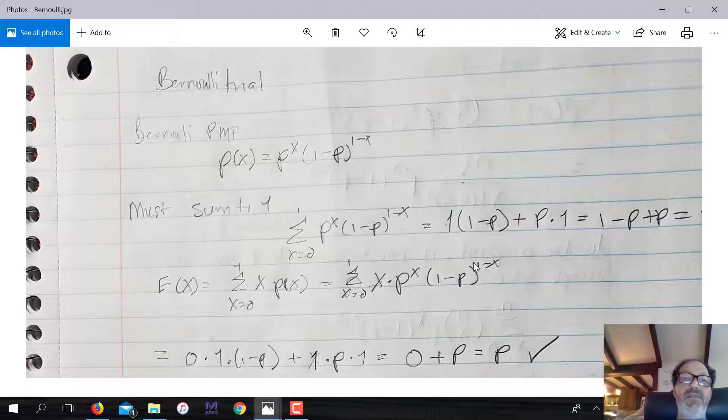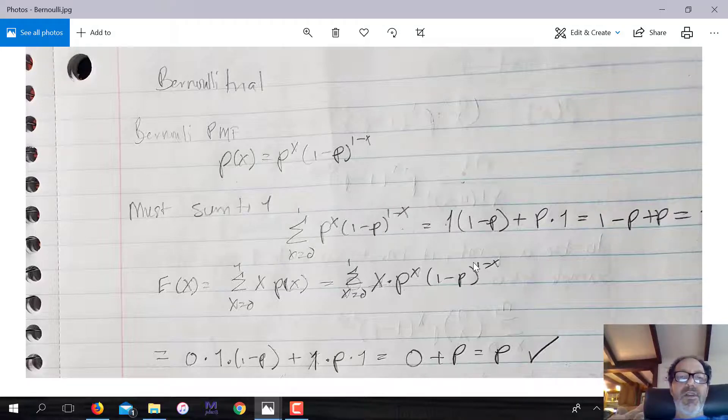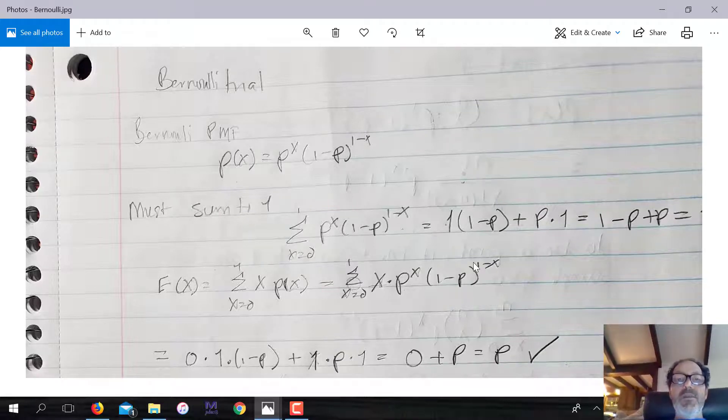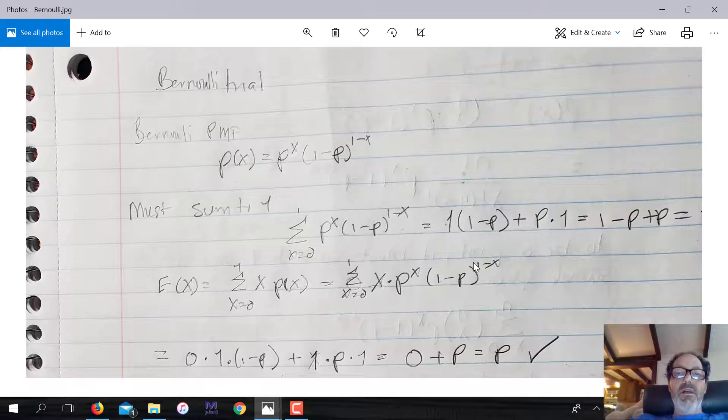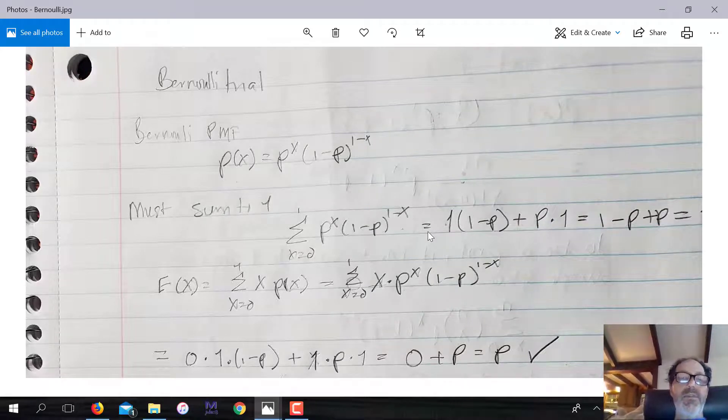They're exhaustive, given that they're the only possible outcomes. So the probability of either of the two outcomes occurring, either a heads or a tail in a flip of a coin, is one. There's only two possible outcomes. Since they're mutually exclusive, it means they can't occur together. You can add up the probabilities and get the probability of either of the two events occurring. And again, since there's only two, it's going to add up to one, because probabilities have to add up to one in the sample space.